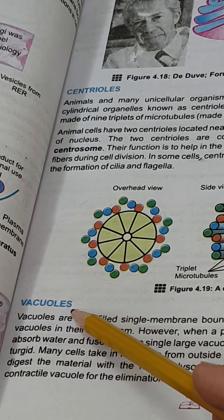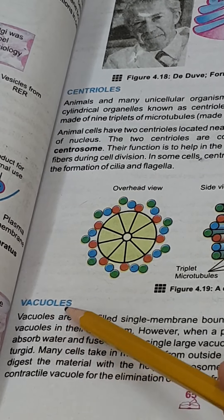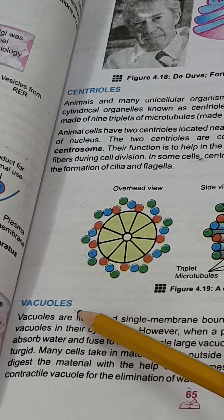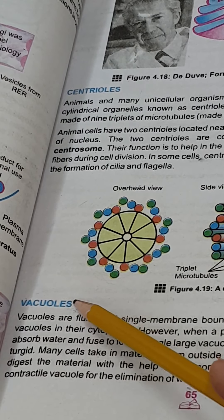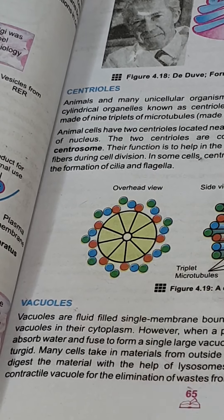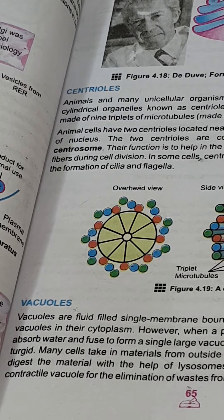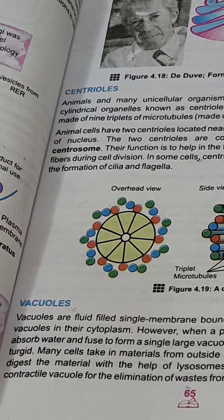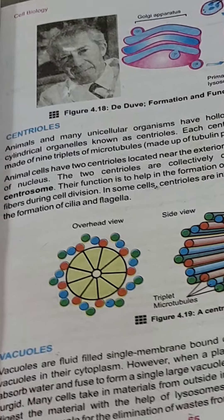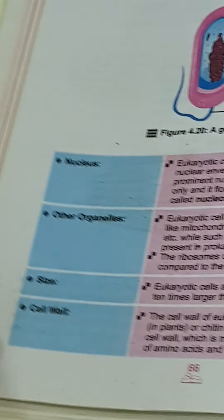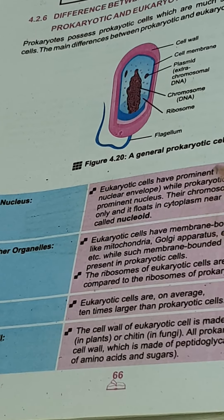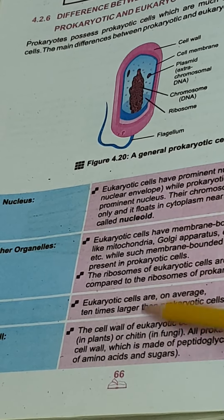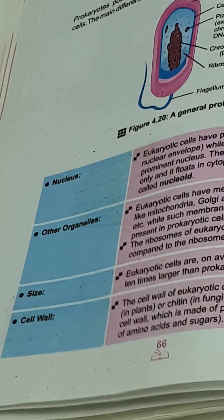In plants, vacuoles have a very important role in maintaining turgidity. When the vacuole is full of water and material, it swells and gives strength and support to the plant cell. This is the last organelle of the eukaryotic cell. After this, a comparison between prokaryotic and eukaryotic cells is given, which students should study on their own.